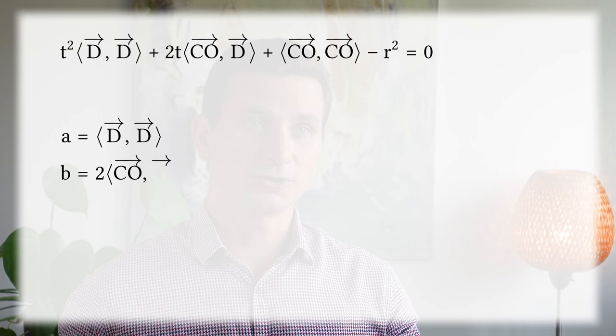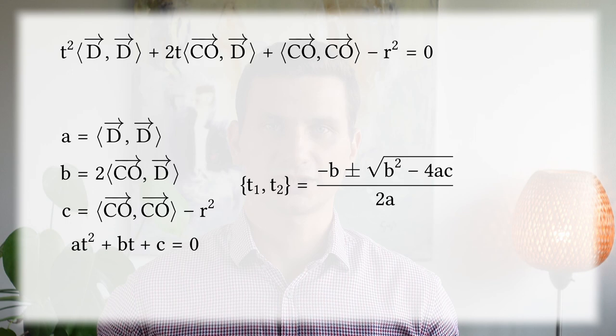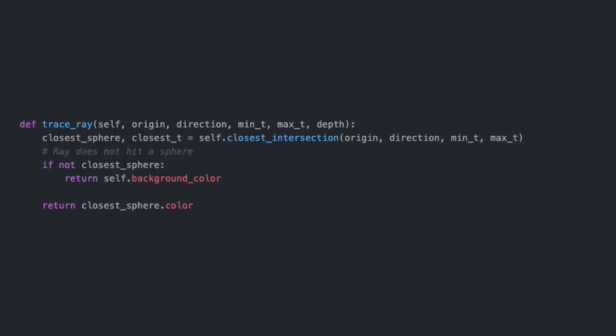This is very convenient because there is a well-known formula for solving quadratic equations. In ray tracing this has a convenient geometrical interpretation: if there's no solution, the ray misses the sphere; if there's one solution, the ray is tangent to the sphere; and if there are two solutions, one is where the ray enters the sphere and one is where it exits.